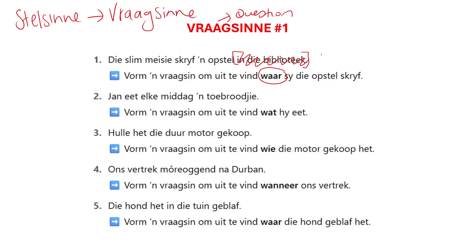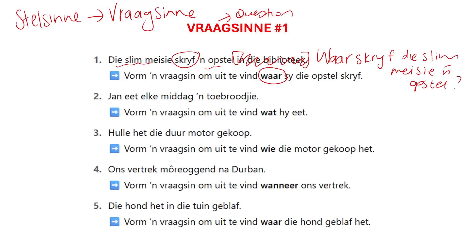Our question word will always be the first word in our question sentence. So: waar. Then immediately after the question word will be our verb. What is our verb in the sentence? It is skreef. So immediately after the question word: waar skreef. And the rest of the sentence, as is, will remain the same: die slimmeisie 'n opstel. So: 'Waar skreef die slimmeisie 'n opstel?' Question mark — it's a question sentence or a fragsene, so please put a question mark.